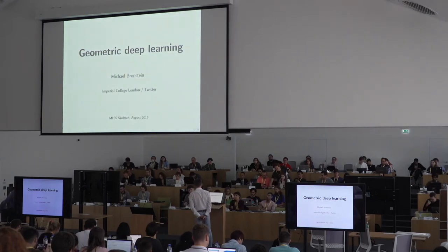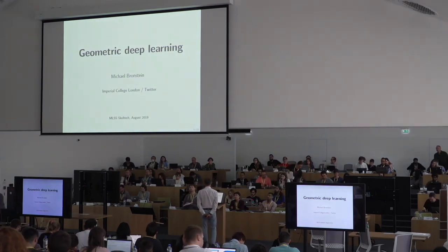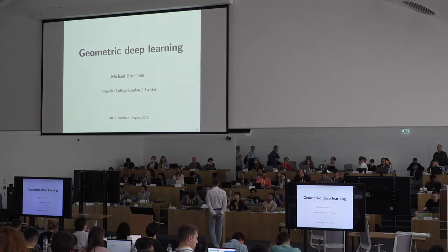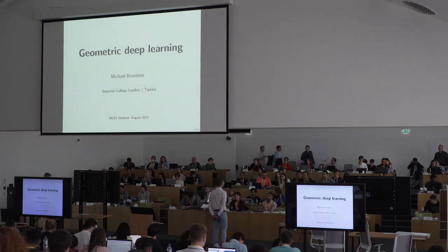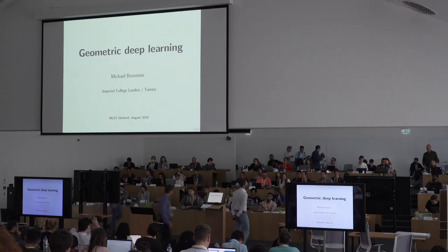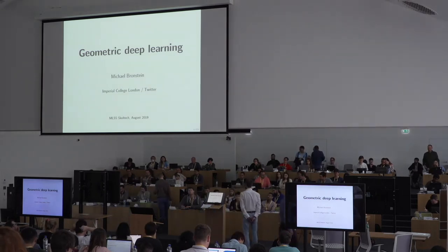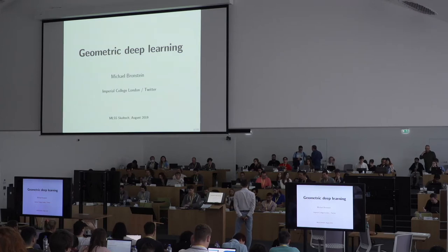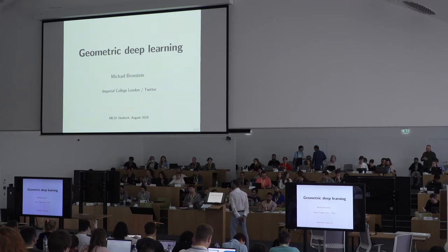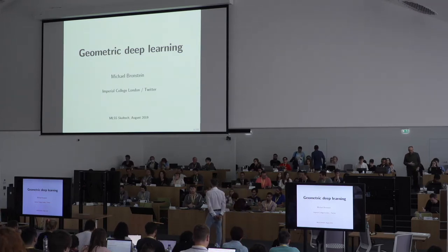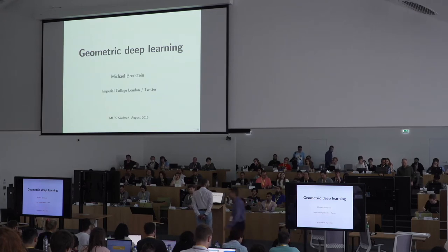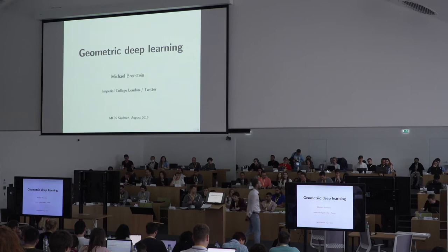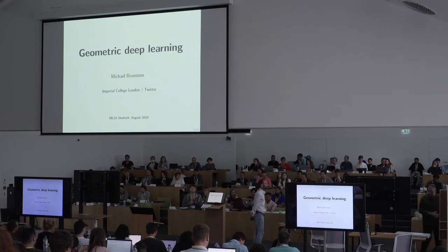Today I would like to talk about what we call geometric deep learning — basically how to extend deep learning methods to non-Euclidean structured data, in particular graphs, manifolds, point clouds, meshes and so on. Today I will try to cover the basics: all the mathematical background you need, focusing primarily on graphs. Tomorrow will be more about geometric objects, manifolds, point clouds and meshes.